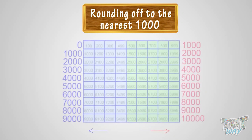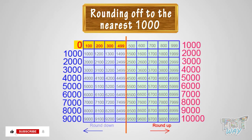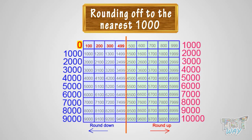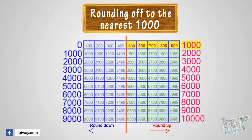Let's have a look at this figure to understand it more. All the numbers 0 to 499 are rounded down to the previous 1,000, that is 0, because they are below the 500 mark or the midway mark between 0 and 1,000. All the numbers 500 to 999 are rounded up to 1,000 as they are on or above the 500 mark.